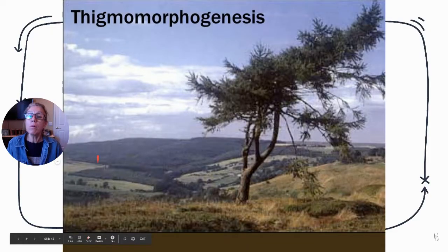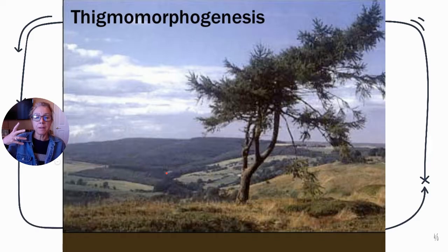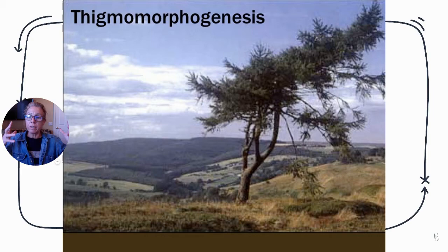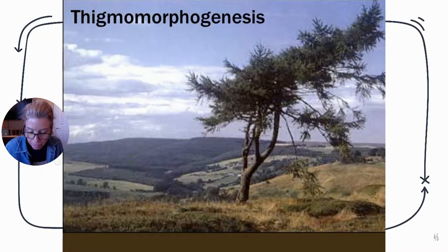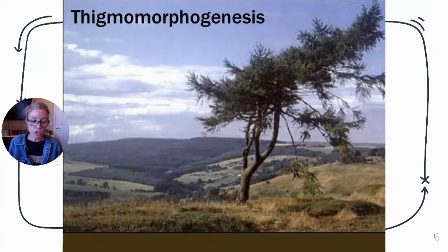Thigmomorphogenesis is a larger concept — you might see some cypress plants or oak trees at the top of a windy area where they appear to be bracing against the wind. Thigmomorphogenesis is when the whole plant changes its shape, like developing a short, thick trunk in a windy location.